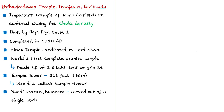The Brihadiswara temple is located in the Thanjavur district of Tamil Nadu and is an important example of temple architecture during the Chola dynasty. This temple was built by Raja Raja Chola I, and construction was completed in the year 1010 AD — which is why the temple completed 1000 years of age in 2010. It is a Hindu temple dedicated to Lord Shiva.